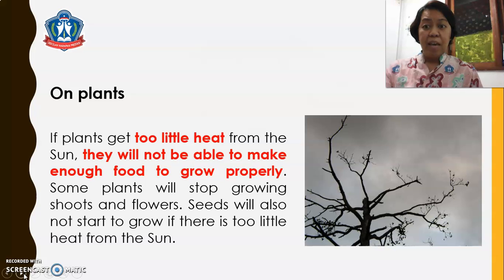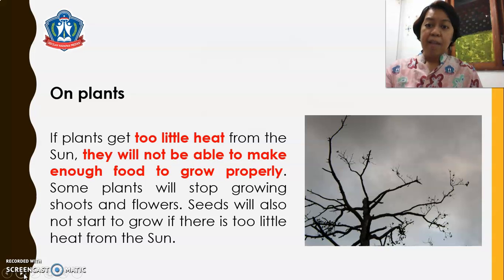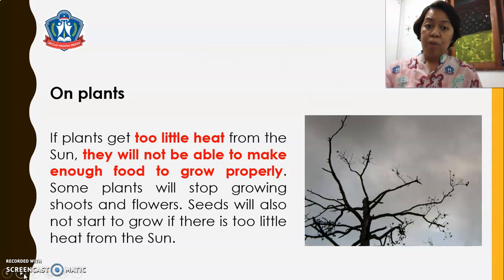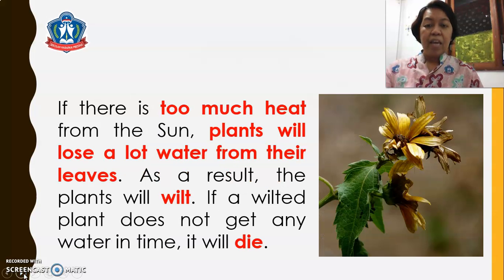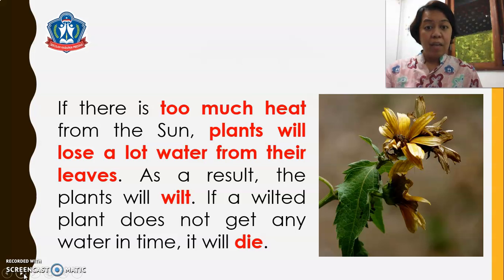On plants, if plants get too little heat from the sun, they will not be able to make enough food to grow properly. Some plants will stop growing shoots and flowers. Seeds will also not start to grow if there is too little heat from the sun. If there is too much heat from the sun, plants will lose a lot of water from their leaves. As a result, the plants will wilt. If a wilted plant does not get any water in time, it will die.